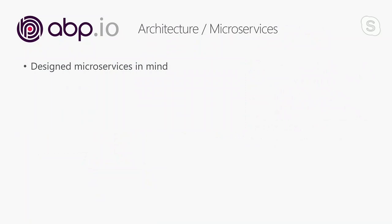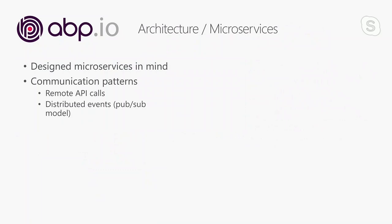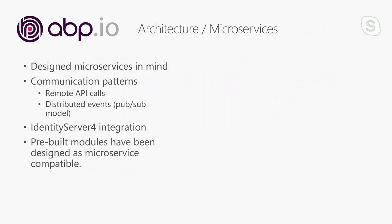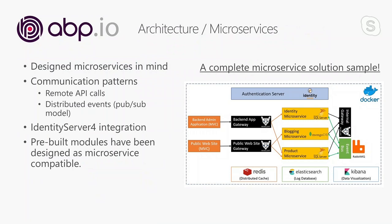Microservices is another trending approach to create scalable systems. The new ABP has been designed with microservices in mind. It provides infrastructure to implement common microservice communication patterns easily. It's integrated with Identity Server for authentication. Pre-built application modules are designed so they can be deployed to separate servers or containers with their own dedicated databases as independent microservices. We have also created a complete microservice solution sample and documented it as a reference model — you can check it on the website.